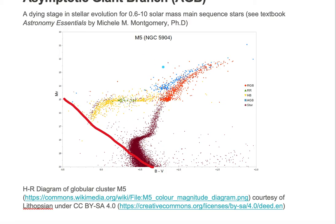The objects that are in blue are on the Asymptotic Giant Branch. This branch occurs after the Horizontal Branch. Stars that were once on the main sequence evolved from subgiant through the Giant Stage into the Horizontal Branch Stage and up into the Asymptotic Giant Branch, which is where these objects are now.